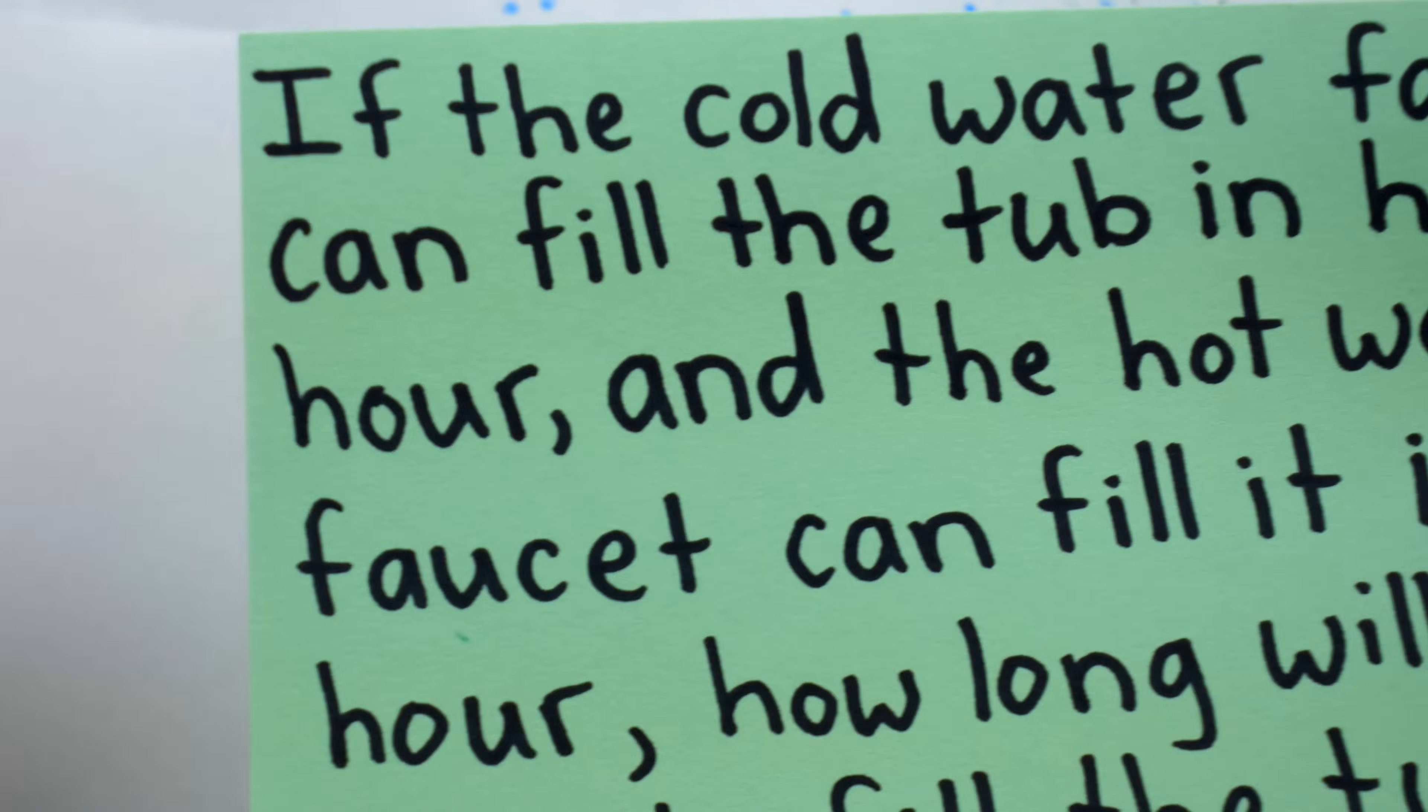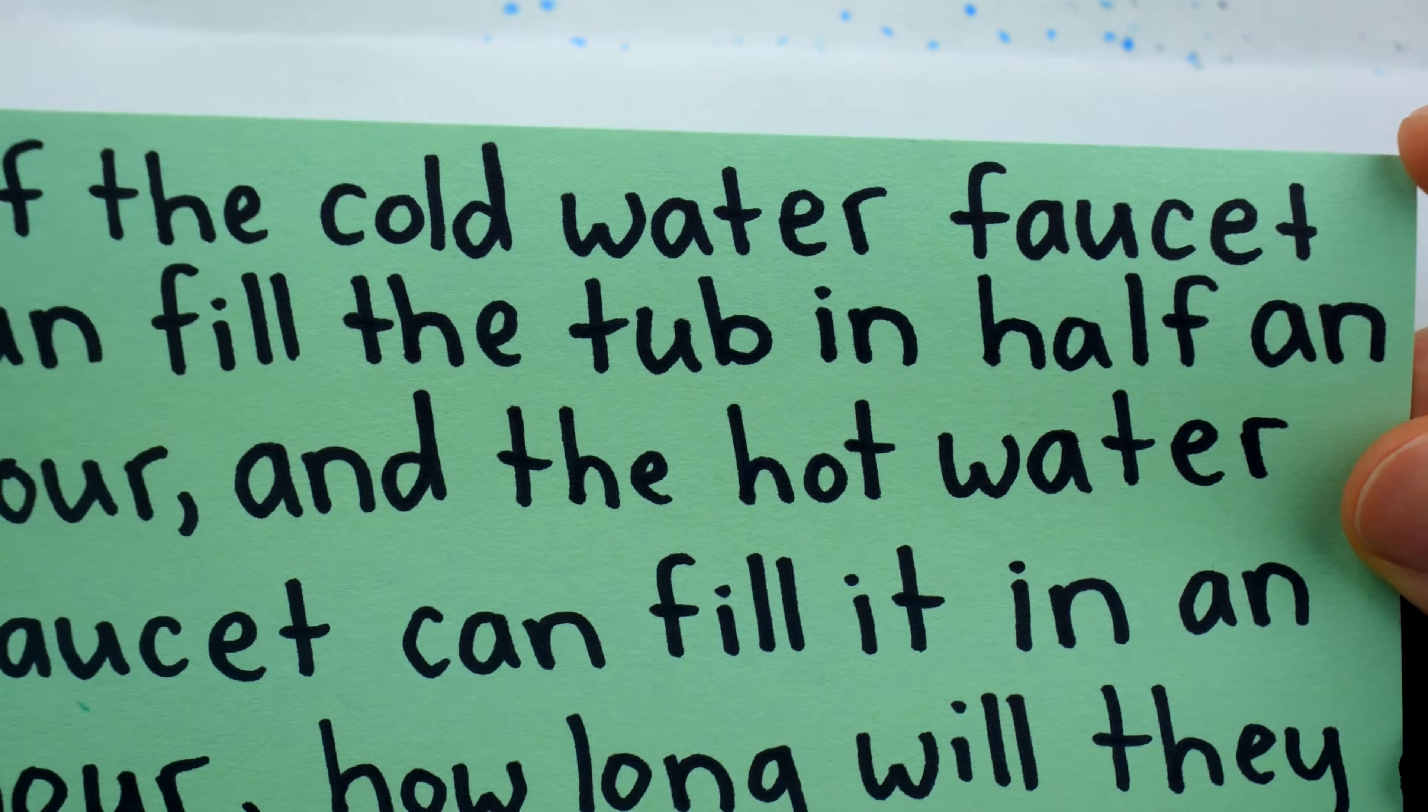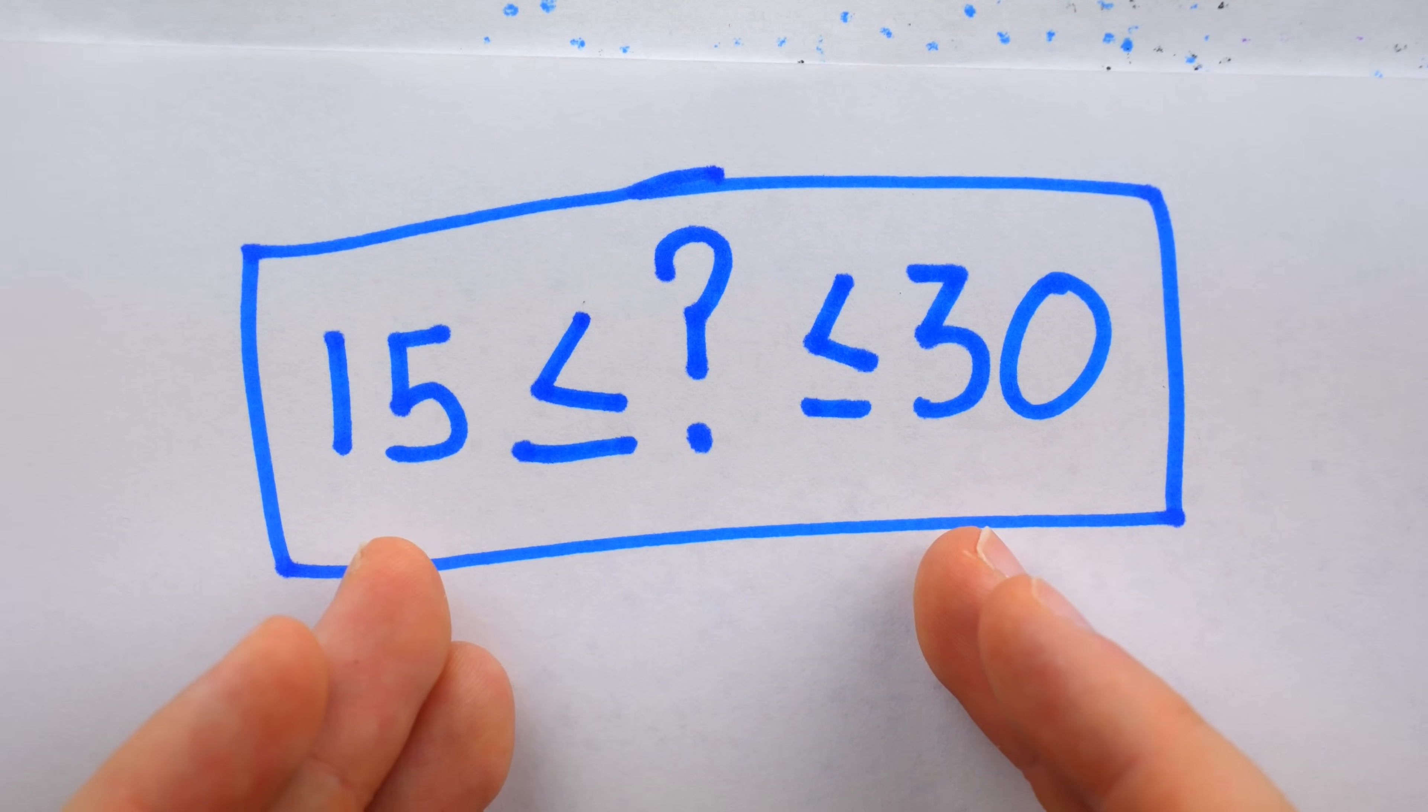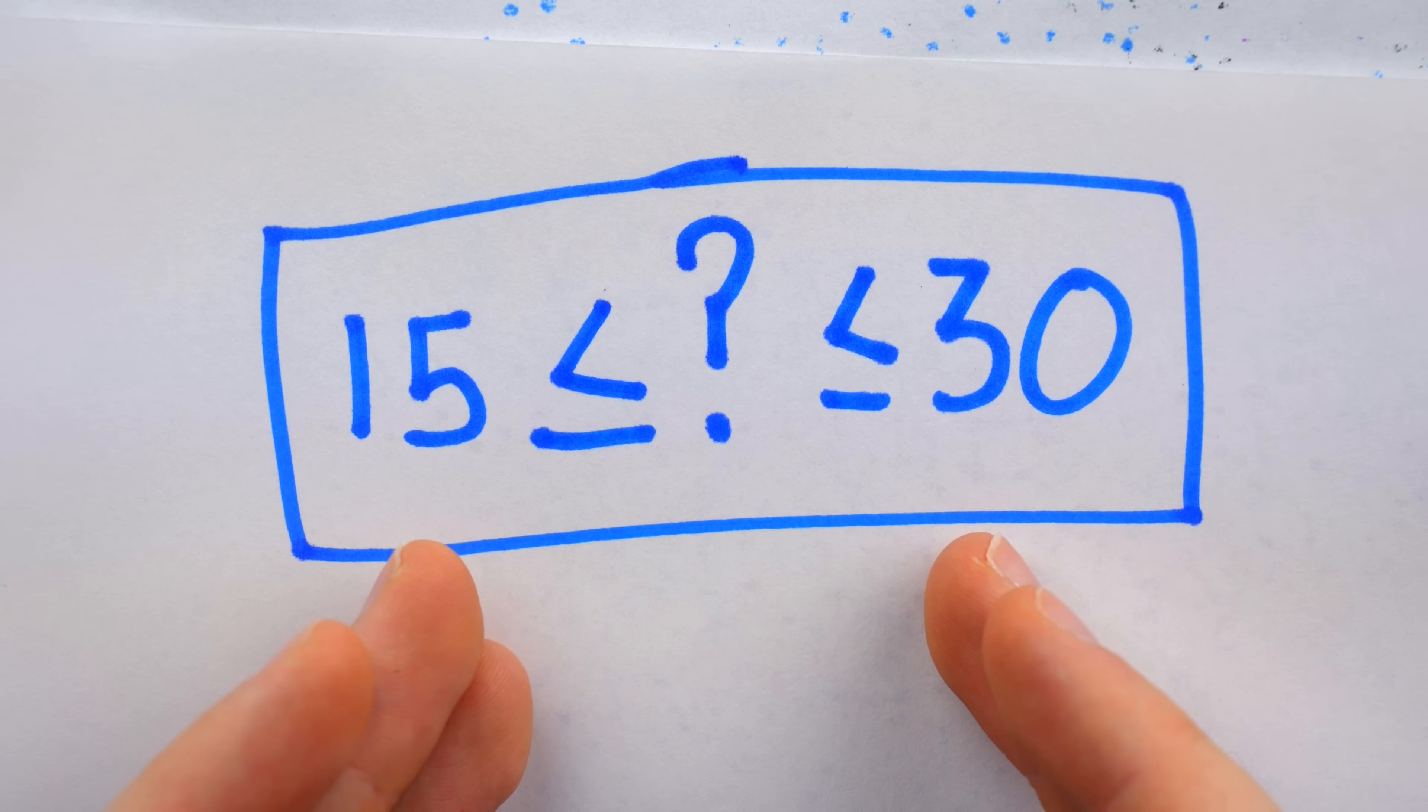Although it's easy to get the problem wrong, it's also very easy to get the problem right. So all of this analysis isn't really necessary, but it just goes to show that you can eliminate some absurd solutions with a little bit of careful thought, which is really useful with more challenging problems. So then what is the correct solution to this faucet tub problem?